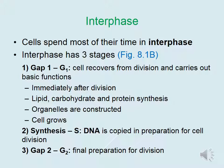After a cell divides, it's missing some molecules and organelles, and it's also smaller than it originally was. So during G1 the cell builds lipids, carbohydrates, and proteins along with organelles. The cell also grows back to its original size.